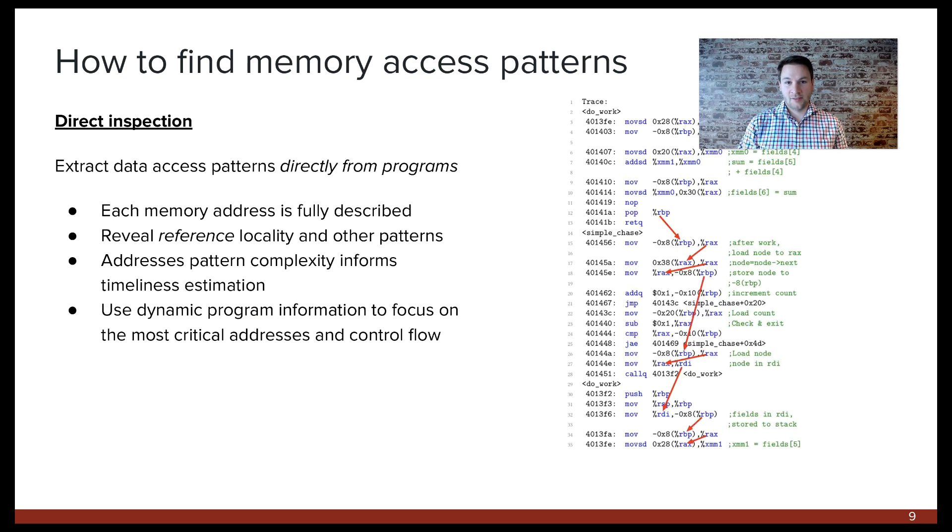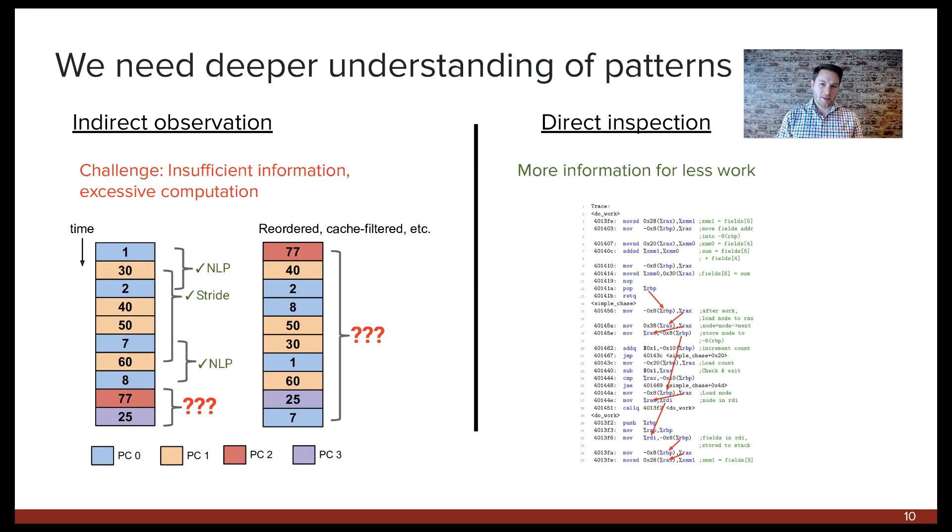Here's another idea. Programs compute every single one of their memory addresses, so why don't we look inside the program itself to find the access patterns? By doing this, we can not only find stride and other spatial patterns like before, but we can also discover new types of locality, such as pointer-based traversals and reference locality, which looks like random noise in the address trace. Putting it all together, we need to better understand memory access patterns in order to make improved prefetchers. There's only so much we can hope to learn from simple address traces, but by shifting paradigms to direct program analysis, we have much more complete information to help guide us.